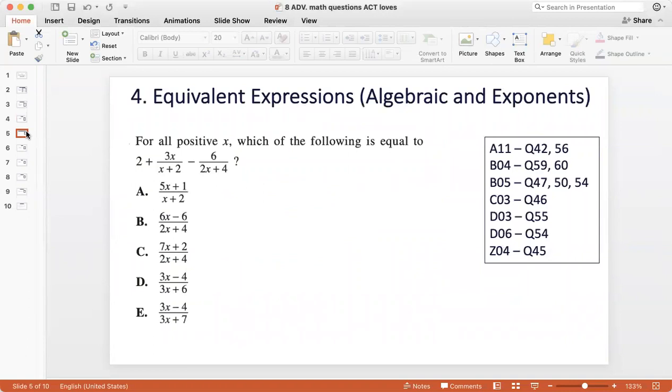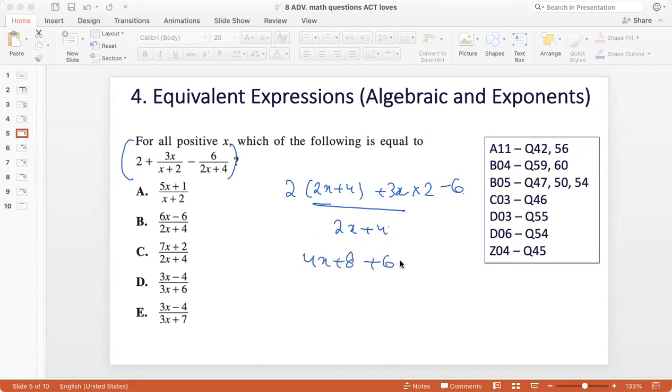The next is equivalent expressions. This accounted for 11 questions. There are two broad kinds of questions under equivalent expressions. One is algebraic, the kind shown here, where an algebraic expression is given to you to solve. Here, I take the LCM of the denominator, so that is 2x + 4. I get 2(2x + 4) + 3x(2) minus 6. So 4x + 8 + 6x - 6 over 2x + 4. So 10x + 2 over 2x + 4. Taking 2 common: 5x + 1 over x + 2. That's the answer.